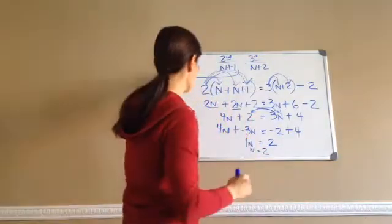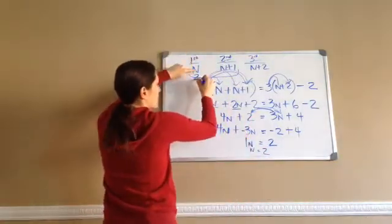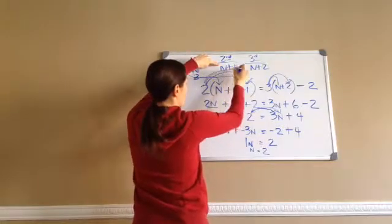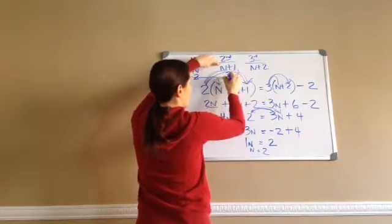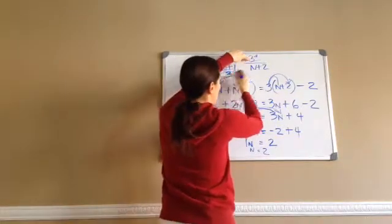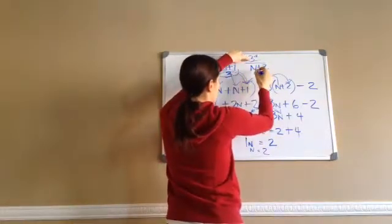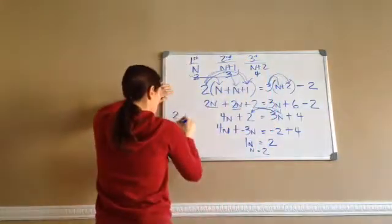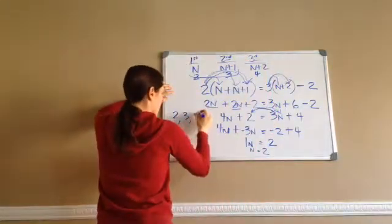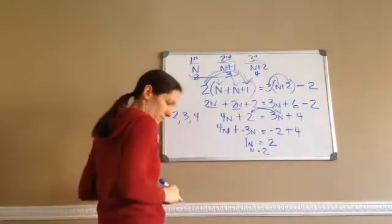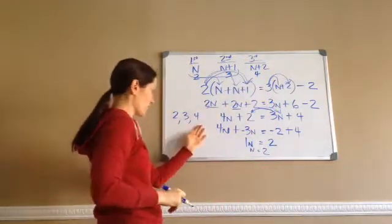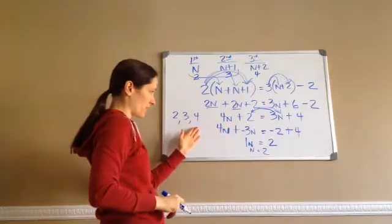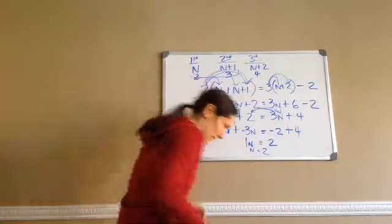If n is 2, then my second integer is 2 plus 1, which would be 3. And my third integer would be 2 plus 2, which would be 4. So this answer is 2, 3, 4 — those are the three consecutive integers that give this answer.